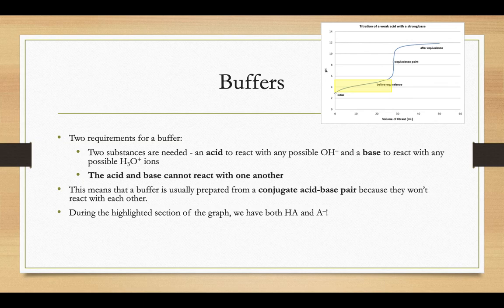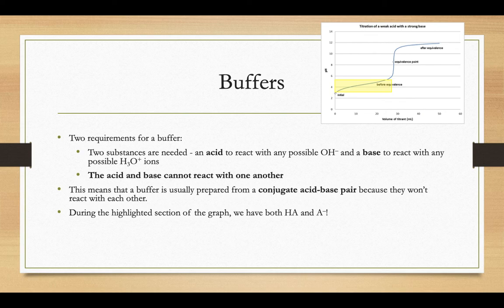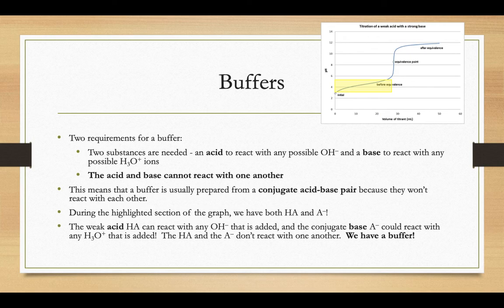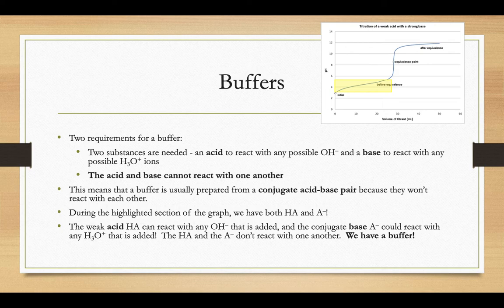So during that highlighted section of the graph, we have HA, a weak acid, and A minus its conjugate base. So the weak acid HA could react with any hydroxide ions that we put in there, like what's happening during our titration there, right? That's a weak acid strong base titration going on.